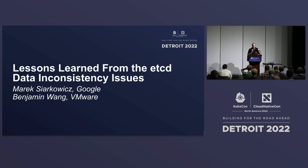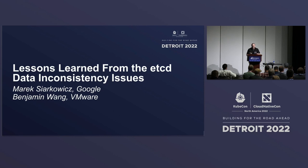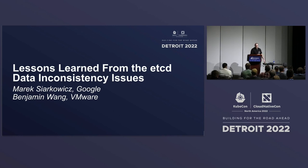Earlier this year there was an event that shocked the cloud-native ecosystem. The latest etcd release had a critical issue — etcd, the component that powers many cloud-native solutions including Kubernetes, could corrupt your data. Every single administrator needed to take action or risk their system becoming unrecoverable. With the popularity of Kubernetes, this means millions of clusters needed to mitigate the issue. We cannot build a cloud-native ecosystem on flaky and unreliable foundations.